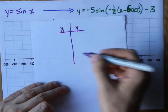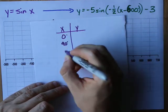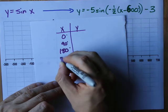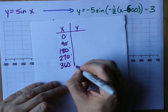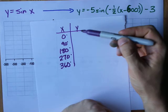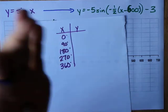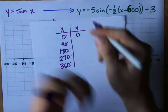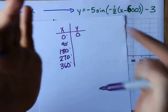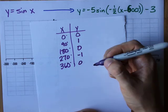The x values we like using for this base function are zero degrees, 90 degrees, 180 degrees, 270 degrees, and 360 degrees. If you haven't memorized the y values that correspond to those, you can use your calculator. Sin zero equals, and your calculator will give you zero. Sin 90 equals, your calculator will give you one, then zero, and negative one, and zero again.